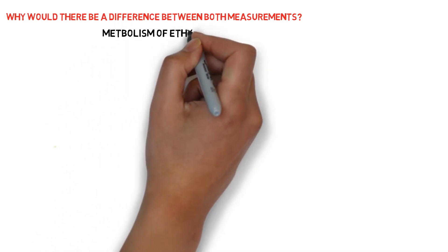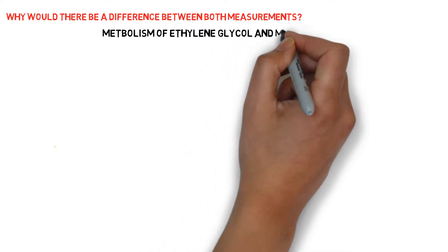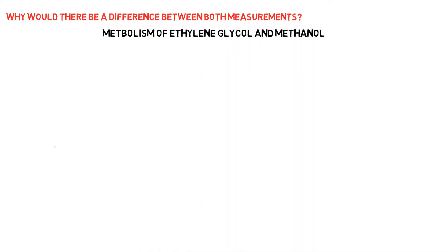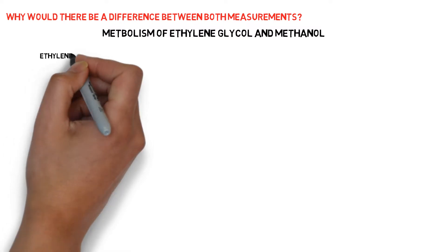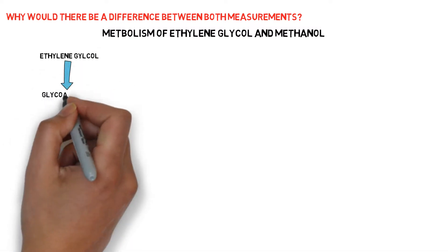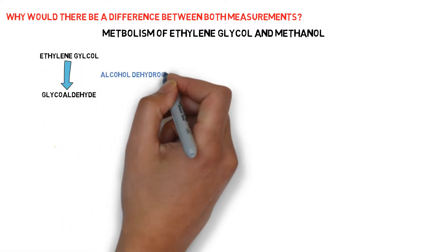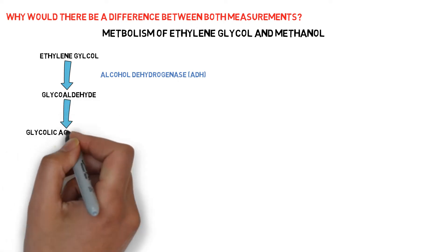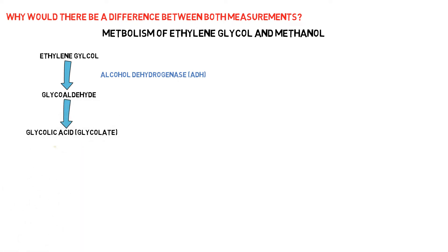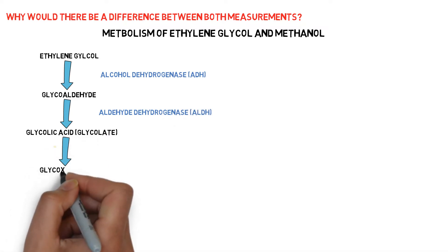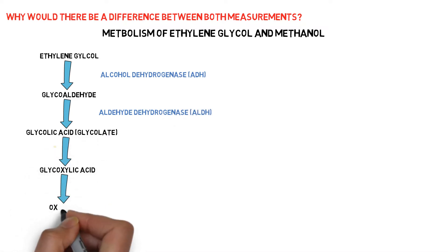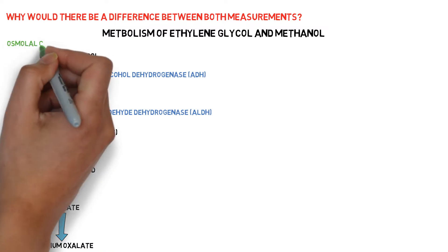We'll try to simplify this by explaining the metabolism of ethylene glycol, though the same can be used to explain methanol poisoning as well. Normally, ethylene glycol is metabolized to glycolaldehyde using the enzyme alcohol dehydrogenase. Glycolaldehyde is subsequently metabolized to glycolic acid, or glycolate, using aldehyde dehydrogenase. Glycolate is subsequently metabolized into glyoxylic acid, oxalate, and calcium oxalate.